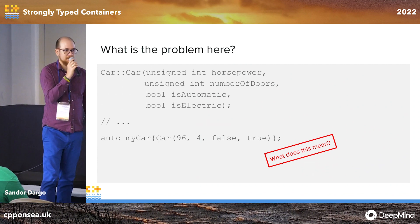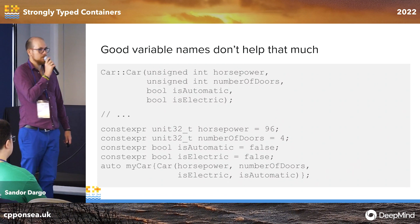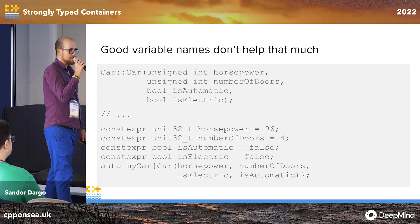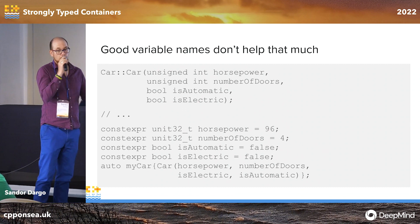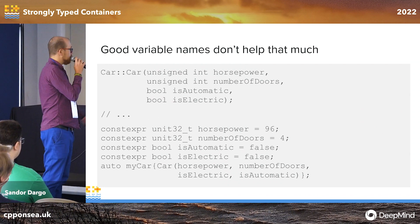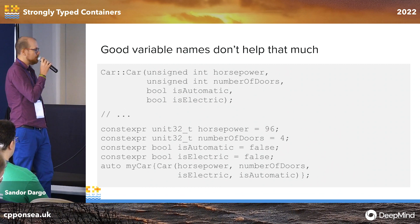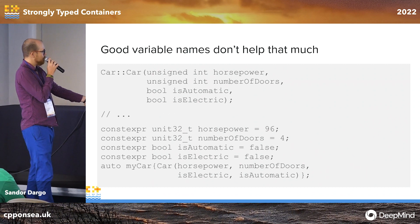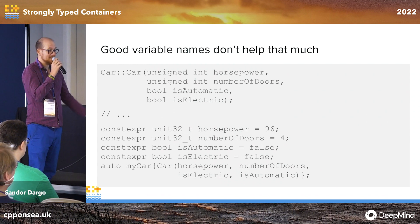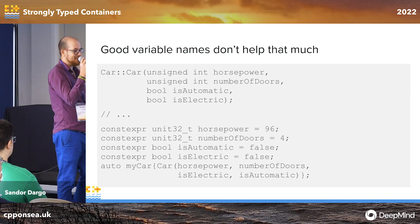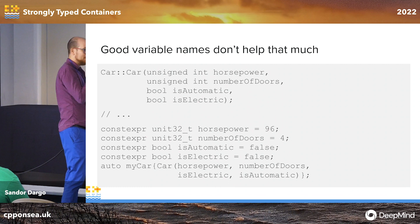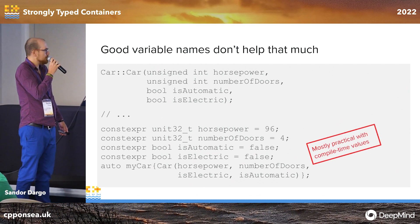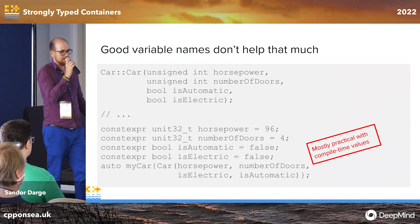What can we do to improve the situation? We could use good names, but does it really help? In some situations with compile-time values it does help — it might help. But you can still swap the arguments. For example, 'is_electric' and 'is_automatic' — I accidentally swapped them while writing the example and decided to leave it, because it really shows the problem with such interfaces. In some situations it's better than before, but still not ideal.